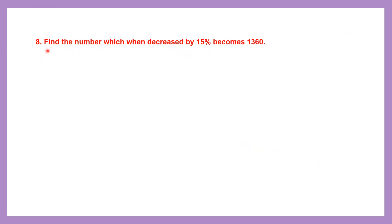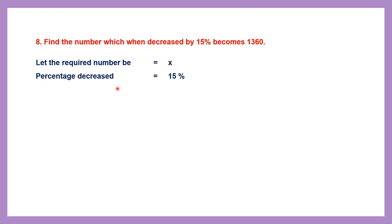Question 8: Find the number which when decreased by 15% becomes 1360. We don't know the number, so let the required number be x. The percentage decrease is 15%, that is 15% of x = 15/100 × x. Cancelling by 5 gives 3x/20. This is the percentage decrease.